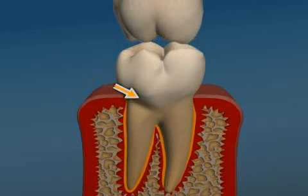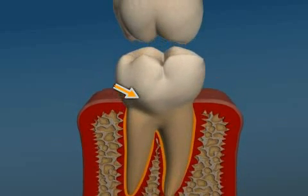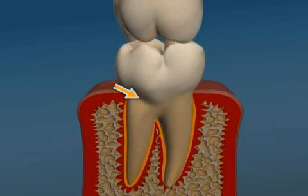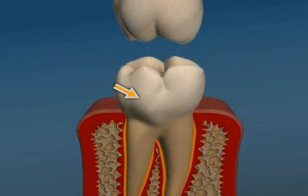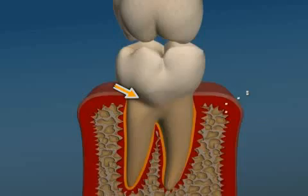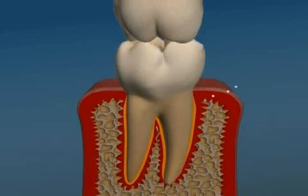Furthermore, this area — the enamel cement border — is frequently exposed to a leverage effect during chewing movements. For example, if the leverage effect is too high because of a malocclusion, or if the dental enamel is too weak because of an individual anomaly in the enamel prisms, part of the dental enamel may in fact break off, resulting in wedge-shaped defects.